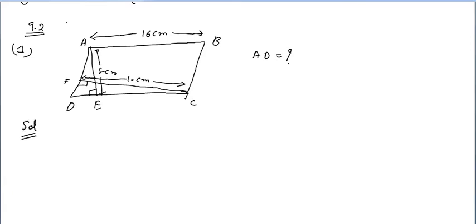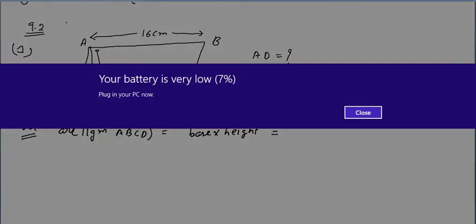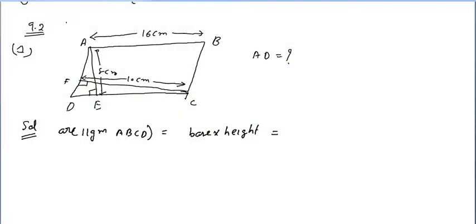So we know that area of parallelogram ABCD equals base into height. First we take base as AB — or CD, since opposite sides of the parallelogram are equal — and height as AE.